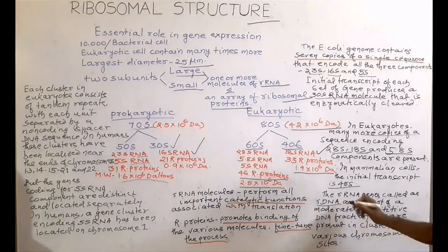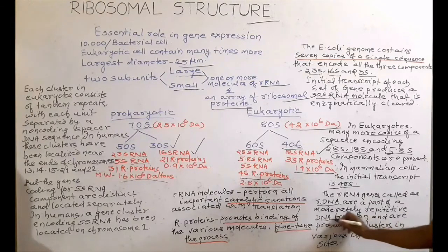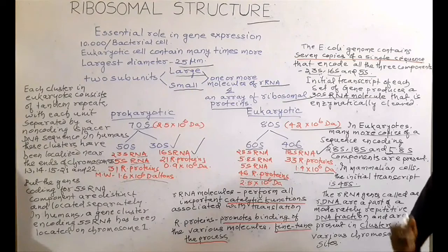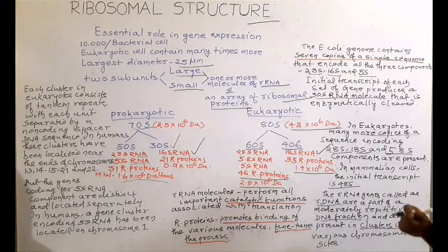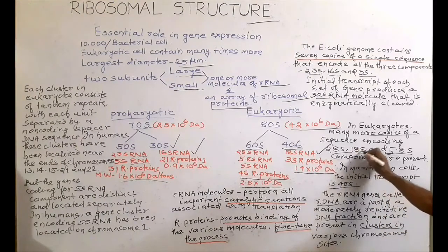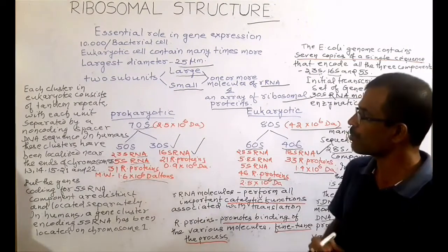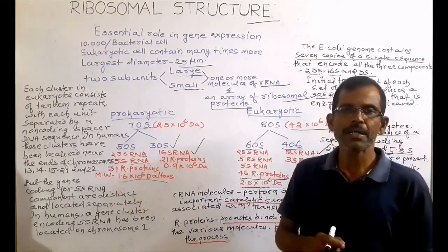The rRNA genes, which are also called rDNA, are part of a moderately repetitive DNA fraction and are present in clusters in various chromosomal sites. As compared to prokaryotes, in eukaryotes, many more copies of sequences that encode various rRNA components including 28S, 18S, and 5.8S are present. Each cluster in eukaryotes consists of tandem repeats and each unit is separated by a non-coding spacer DNA sequence.